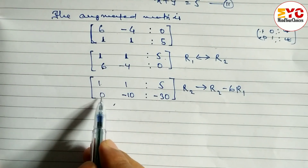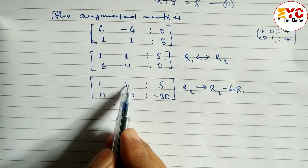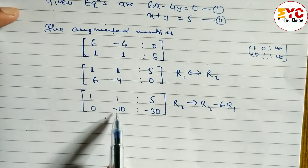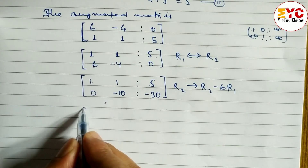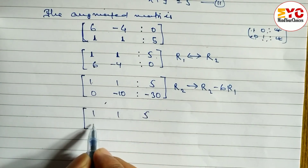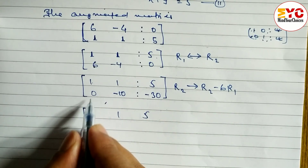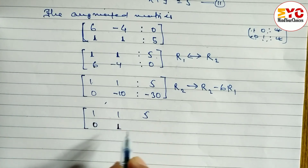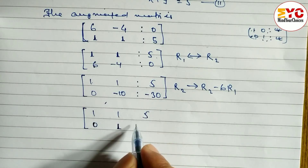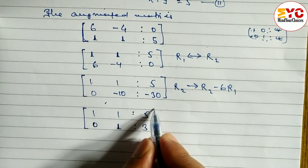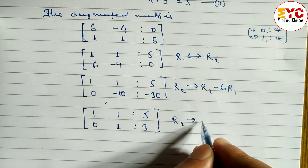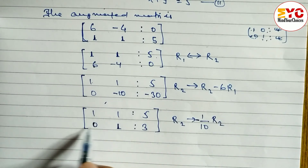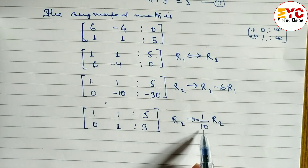Now we need a 1 in the second row's second position. We apply R2 = (−1/10)·R2, dividing the second row by minus 10. Zero divided by minus 10 stays zero; minus 10 divided by minus 10 gives 1; minus 30 divided by minus 10 gives 3. So row two becomes [0, 1, 3].